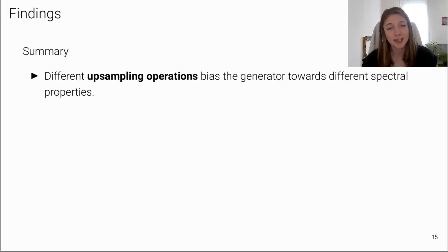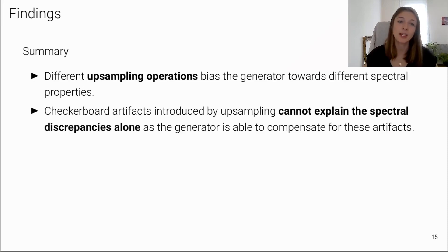Okay, let me again summarize our most important findings. Different upsampling operations bias the generator towards different spectral properties. While bilinear upsampling results in too few high frequencies, bed-of-nails upsampling introduces checkerboard patterns. However, these checkerboard artifacts cannot explain the spectral discrepancies alone, as the generator is able to compensate for these artifacts.